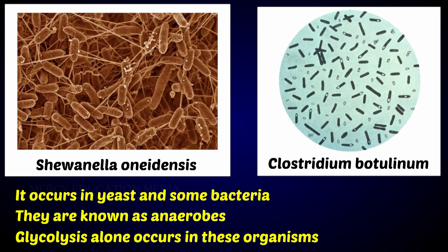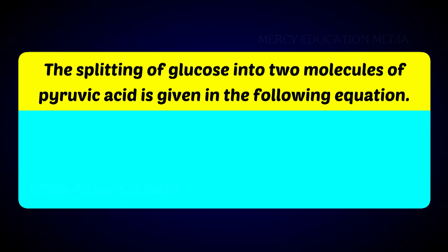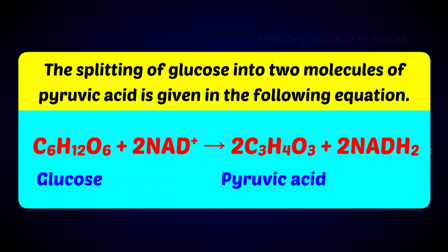Glycolysis alone occurs in these organisms. The splitting of glucose into two molecules of pyruvic acid is given in the following equation. In anaerobic respiration, the respiratory substrate is not completely oxidized to release energy. Glucose is split into two molecules of pyruvic acid.